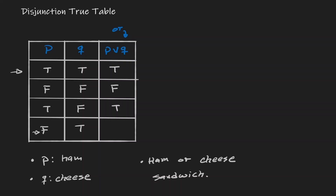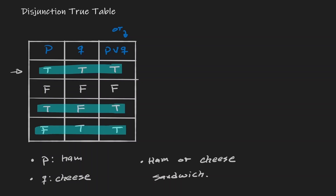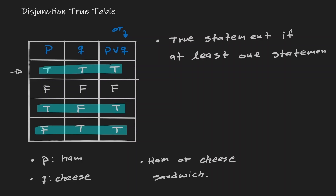In the last row, it is false that I put ham but true that I put cheese. Did you get a ham or cheese sandwich? The answer is yes — true. Notice when the OR or disjunction column was true: it was true in rows one, three, and four. A disjunction statement is true if at least one of the statements is true.